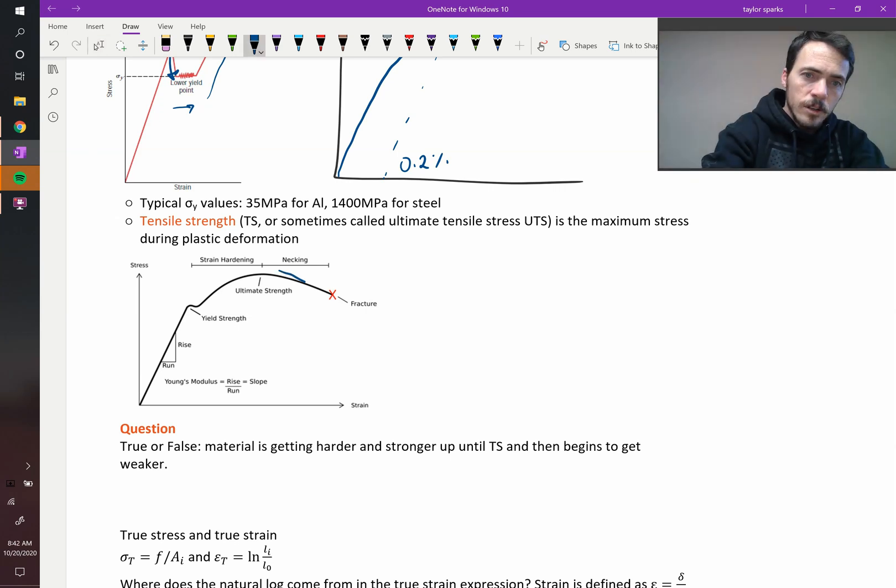It's still deforming, but the stress to make it deform is going down, down, down. So this is your maximum or your ultimate tensile strength, that's the maximum that it can ever withhold, and after that it goes down, and then you of course have your stress at fracture as well.